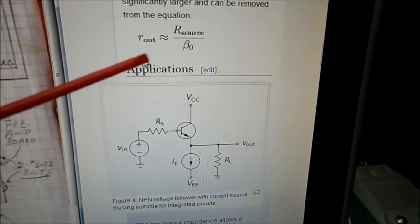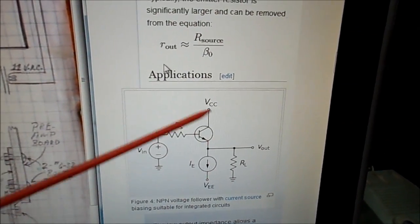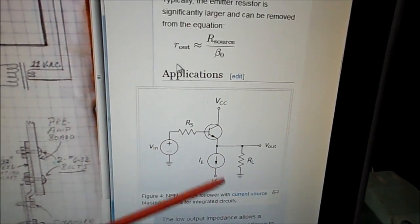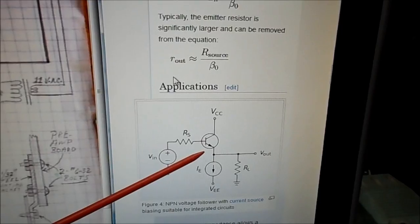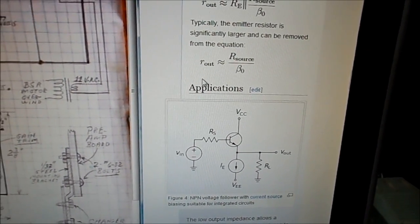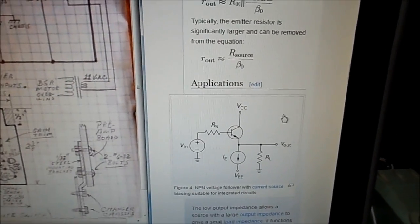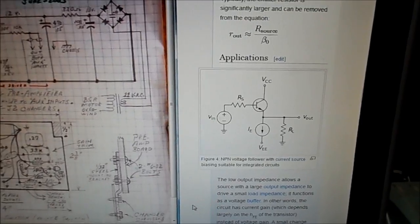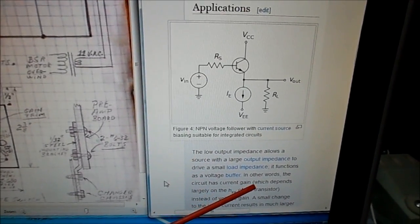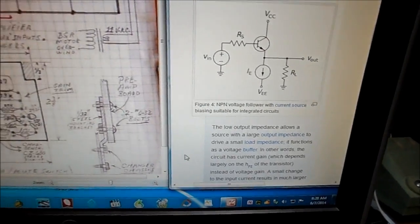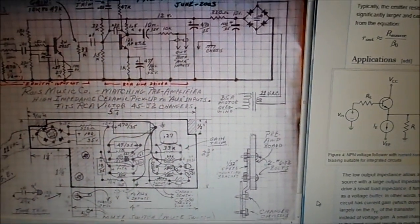If you go over here to Wikipedia, there's all types of articles on this circuit. You should have no trouble. I would say try one experiment. Like it says here, the low impedance allows a source with a large output impedance to drive small load impedance. It functions as a voltage buffer. In other words, the circuit has current gain instead of voltage gain. You can read up on that when you get a chance.